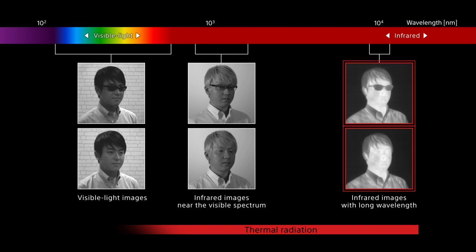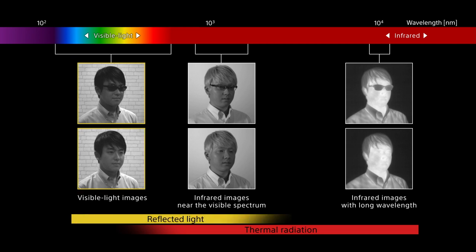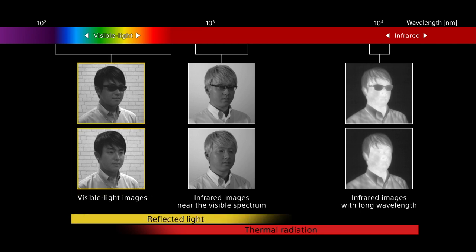Long infrared images capture an object's thermal radiation, unlike visible images that capture the reflected light. On the other hand, short wavelength infrared images look similar to visible light images since the wavelengths are close to visible light.